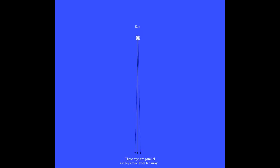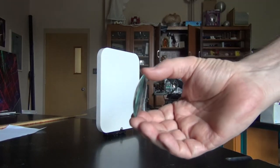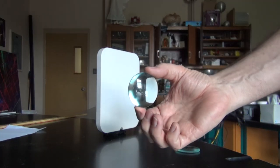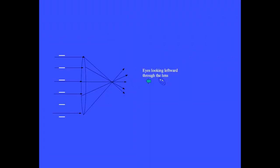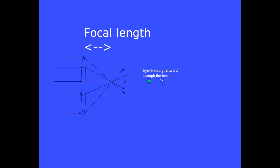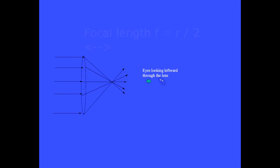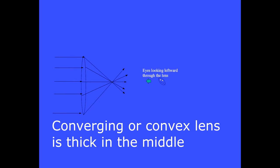The sun sends out light rays in every direction. Far away from the sun, this group of rays are nearly parallel to each other. Both sides of this glass lens have a spherical shape. As these parallel rays travel through the glass lens, they all meet at this point. This is said to be the focal point of the lens. This focal length is equal to half the radius of curvature of one side of the spherically shaped lens. This is said to be a converging lens or a convex lens, and it is thick in the middle.